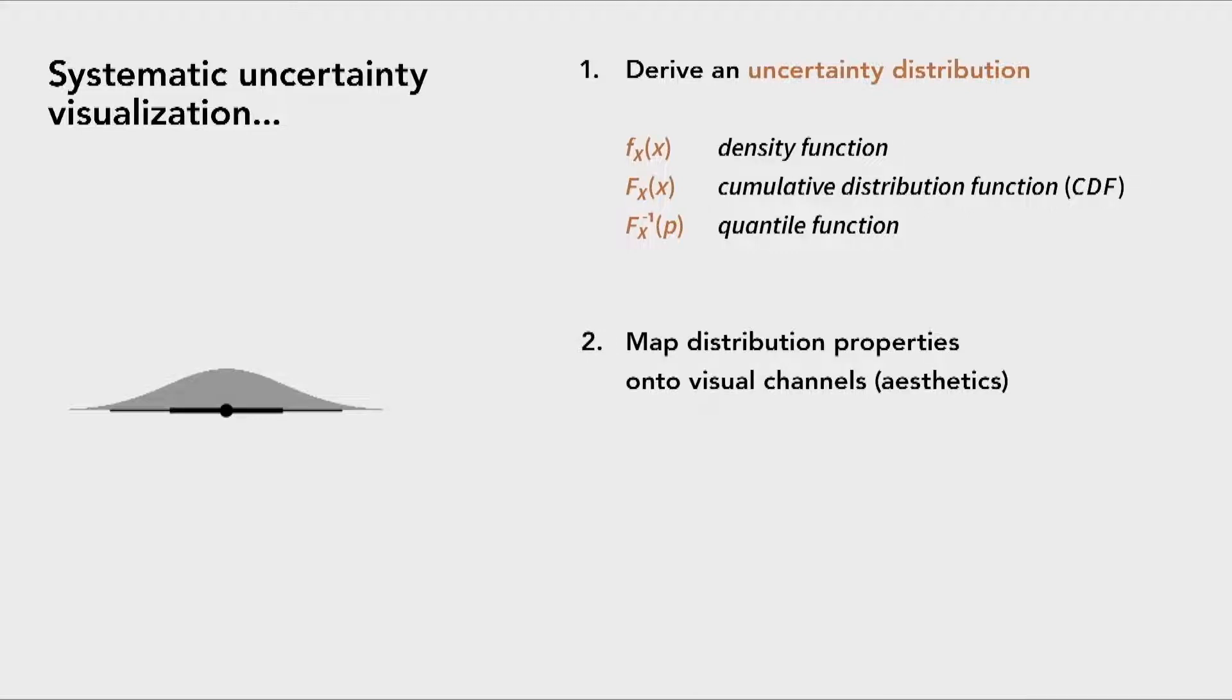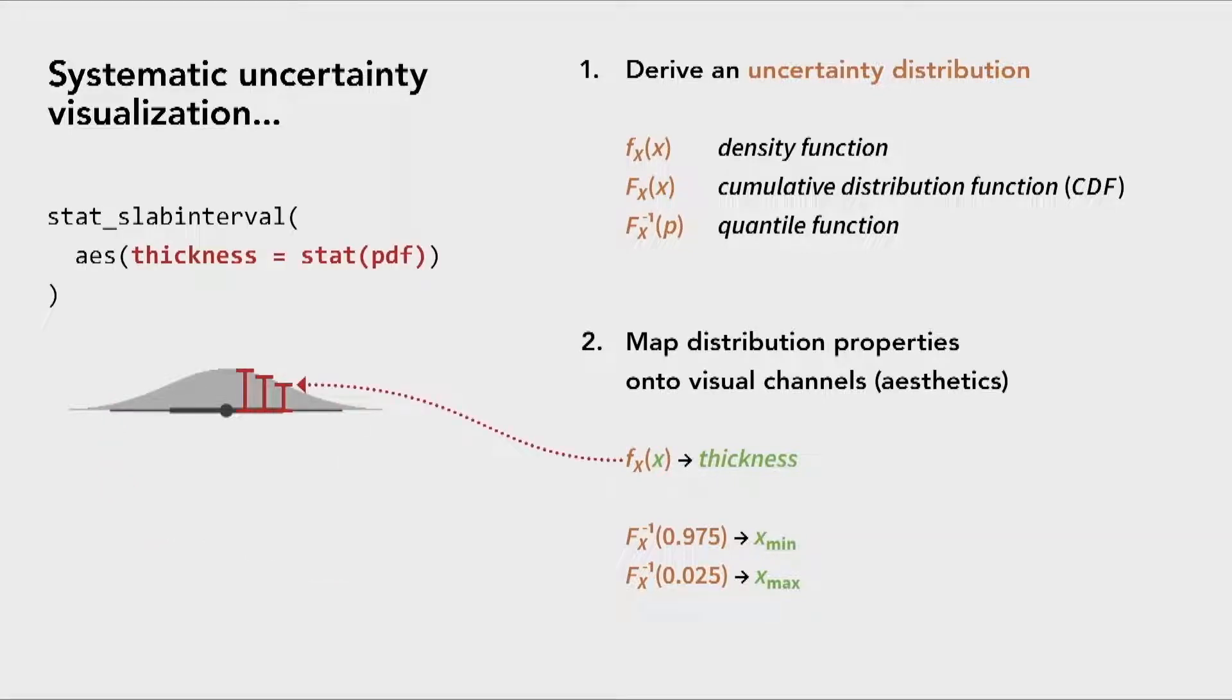This density plot you have on the left might be taking the density function and mapping it onto the thickness of this slab. And you combine it with an interval, which might be, say, taking two quantiles and mapping them onto the xmin and xmax of the interval subgeometry. And this is exactly how ggdist thinks about uncertainty visualization. You have stat slab interval, and you're saying, I want to map the PDF, so the density function, onto the thickness aesthetic.